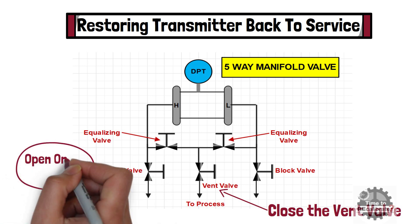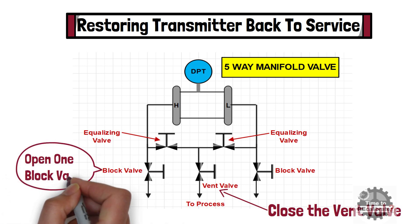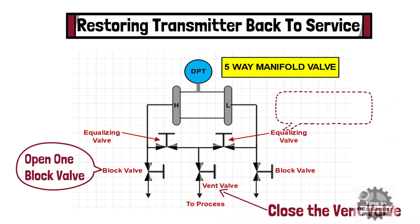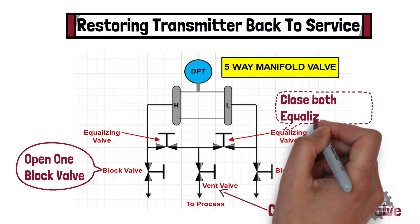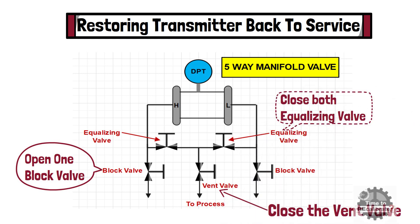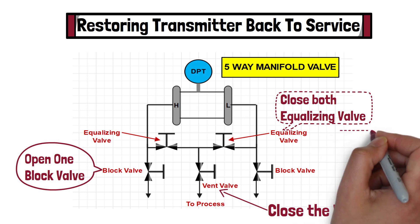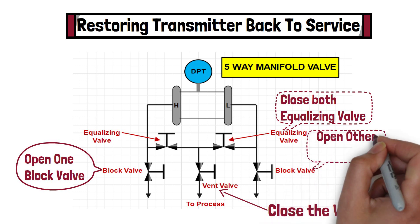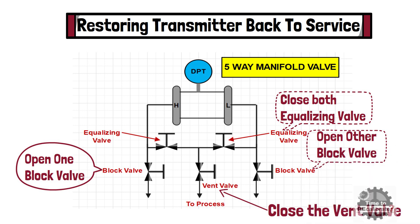Then open one of the block valves. After this, close both equalizing valves — which one does not matter. At the end, open the other side block valve. Once we open the other side block valve, the DPT is in service and it will show the differential pressure reading on the display.